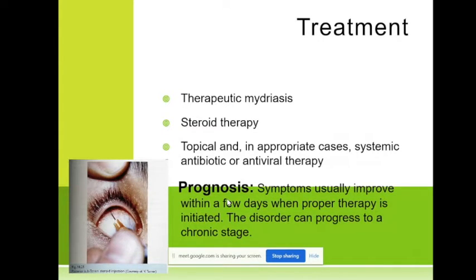There are subconjunctival and peribulbar injections with steroids. We also give antibiotic therapy and antiviral therapy as a third component. The prognosis is usually good in the first and second episodes, but as iridocyclitis comes again and again it can progress to a chronic stage.